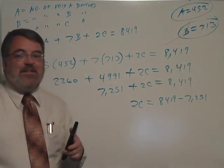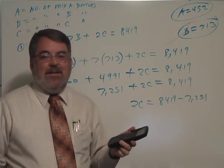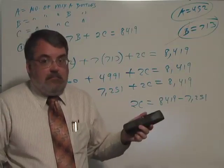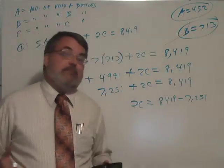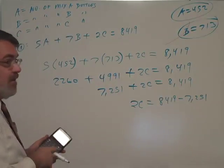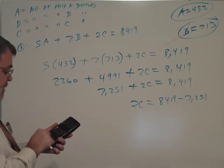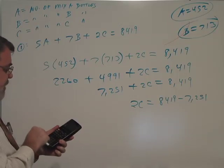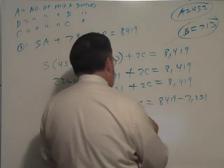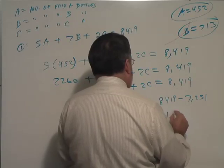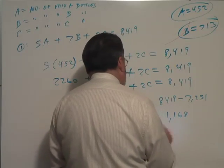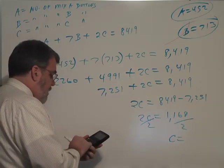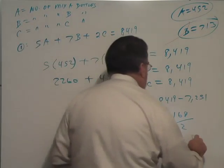I hope you realize that the steps I'm taking are really essentially no different from smaller problems with smaller numbers. Same process. You know, I'm using a calculator to help make it go faster. All right, so 8,419 minus 7,251 is 1,168 divided by 2. C equals to 584 exactly.